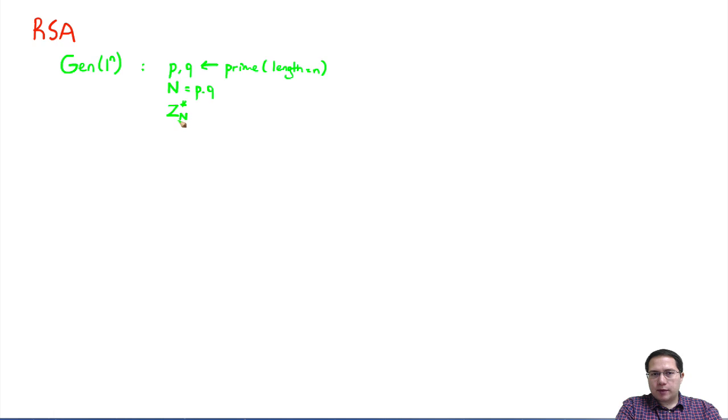This value n defines the composite order group Z_n* - integers modulo n that are relatively prime to n, and the group operation is multiplication modulo n. This group has order phi(n), that is p minus 1 times q minus 1. Then this gen algorithm computes two values e and d such that e times d is equivalent to one modulo this order of the group.